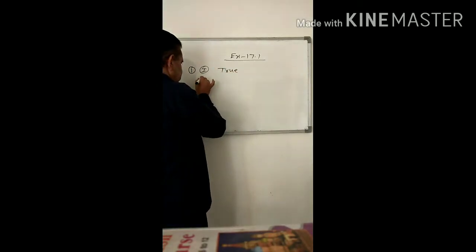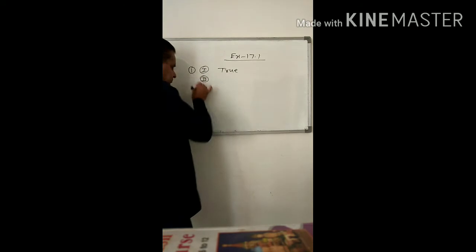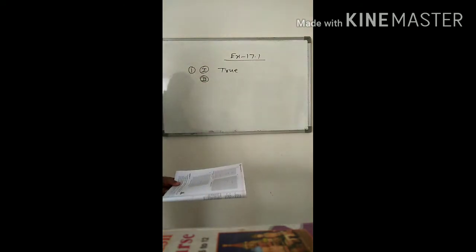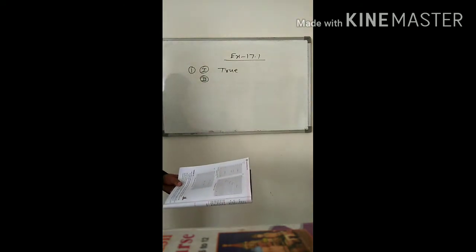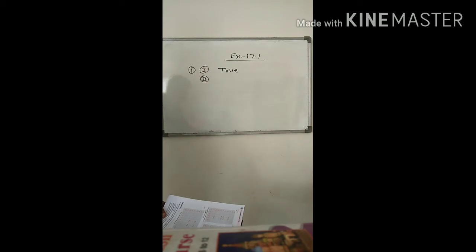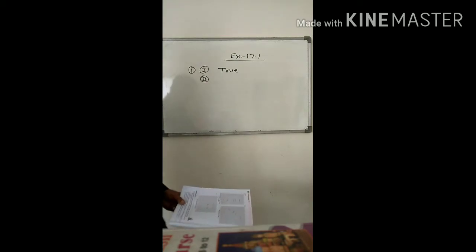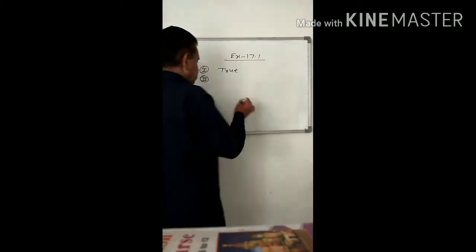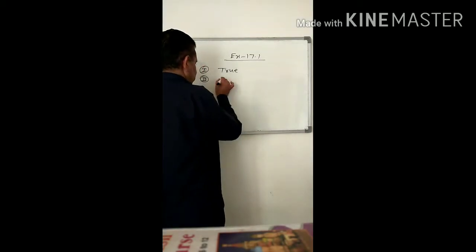2nd part: A point where y-coordinate is 0 and x-coordinate is 7 will lie on y-axis. This is false.